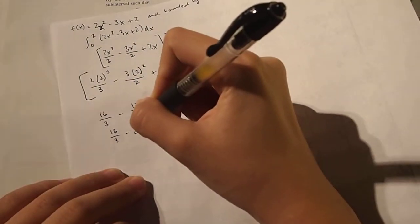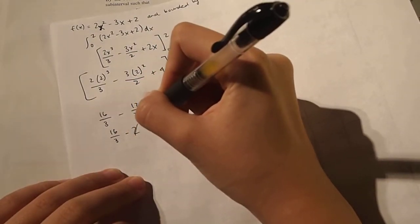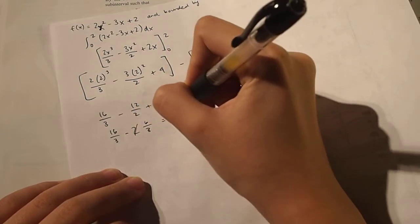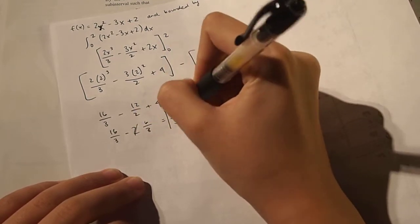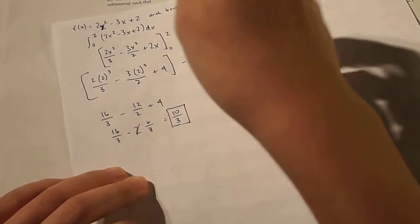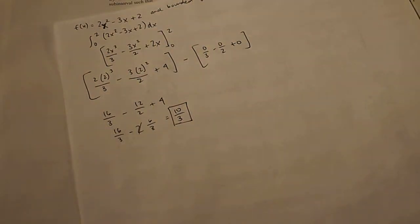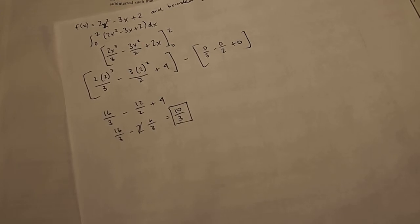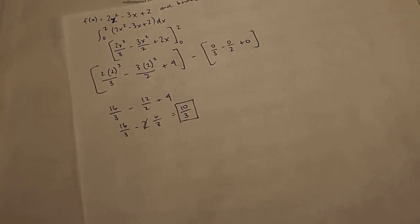This is also equal to 16 over 3 minus 6 over 3, which is equal to 10 thirds. So 10 thirds is our answer, and it's the integral of this function from 0 to 2, which also means it is the area under this function from the vertical lines x equals 0 to x equals 2.